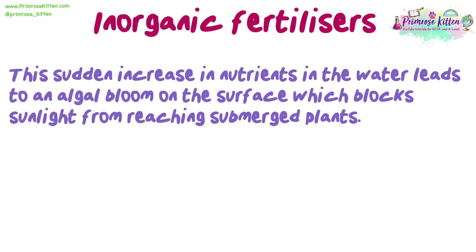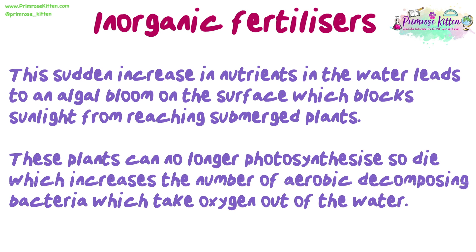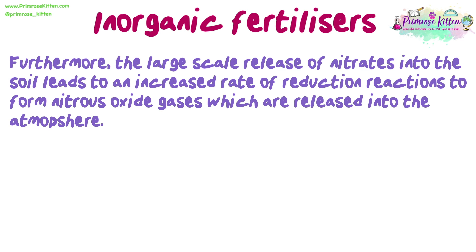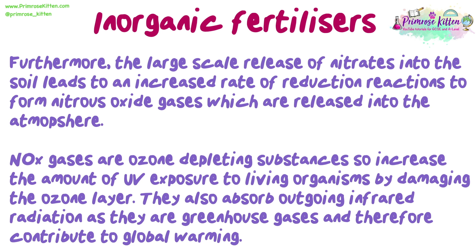This sudden increase in nutrients in the water leads to an algal bloom on the surface, which blocks sunlight from reaching submerged plants. These plants can no longer photosynthesise, so they die, which increases the number of aerobic decomposing bacteria which take oxygen out of the water. This process is called eutrophication and can lead to the death of other aerobic organisms in the water if dissolved oxygen levels fall outside their range of tolerance. Furthermore, the large-scale release of nitrates into the soil leads to an increased rate of reduction reactions to form nitrous oxide gases released into the atmosphere. Nitrogen oxide gases are ozone-depleting substances, so they increase UV exposure to living organisms by damaging the ozone layer.